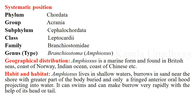Regarding geographical distribution, Amphioxus is a highly marine animal found in British seas, coast of Norway, Indian Ocean, and coast of China. Its habitat is shallow water, where it burrows in sand near the shore with most of its body buried and only its oral hood projecting into the water. It can swim and burrow rapidly with the help of its head and tail, and it is more active during the night.